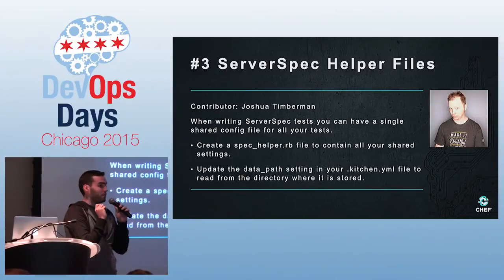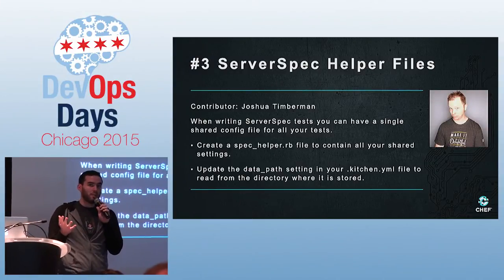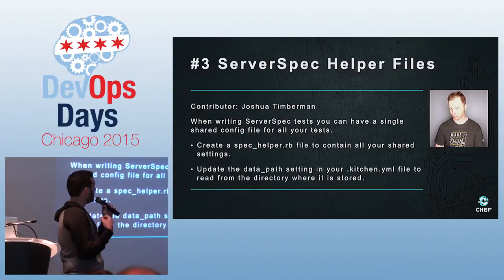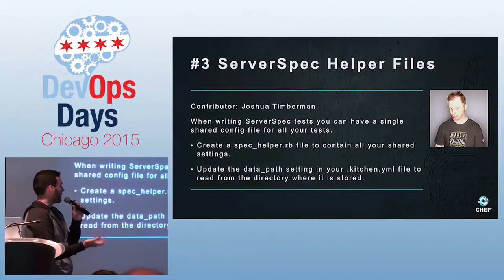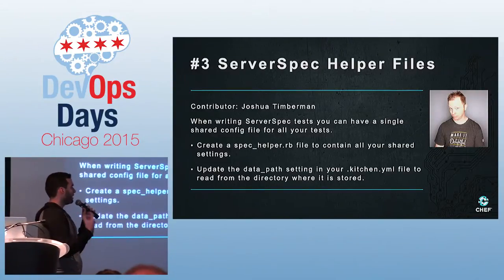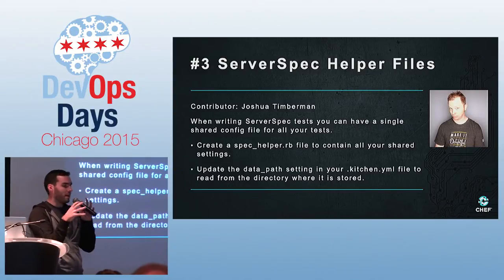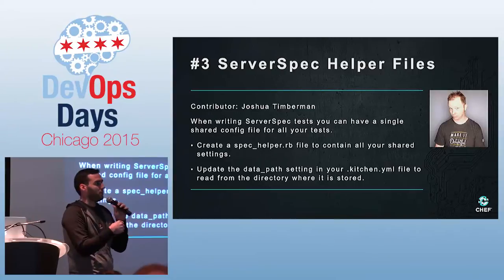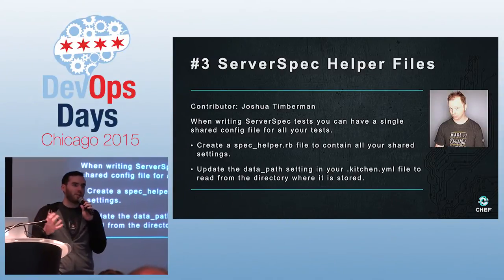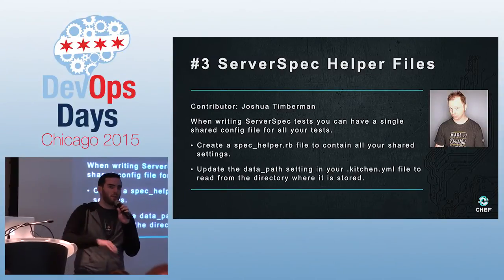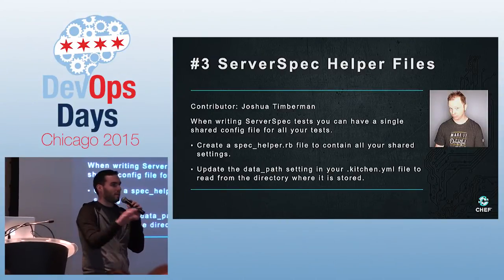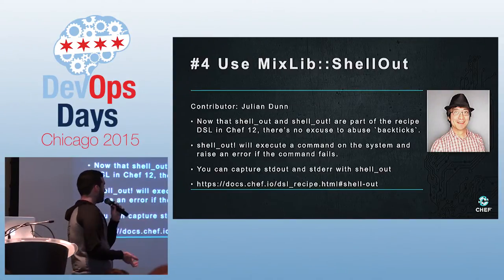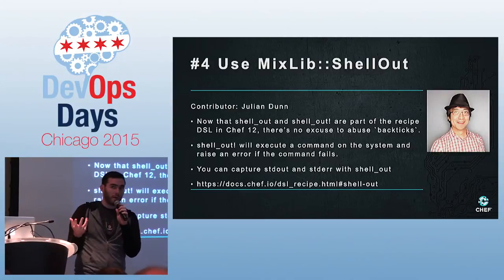For those of you doing testing using ChefSpec or Test Kitchen, having a spec_helper file allows you to manage all of your shared settings, and that cleans up your tests. If you have a consistent value that's going to appear across all of your tests, rather than putting that in every single test, you can put it in your spec helper. You can also put fixtures in your data path.